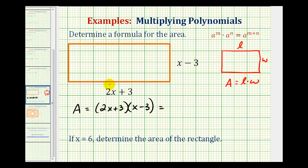So remember we'll have four products. We'll distribute the 2x here and here and then distribute the 3 here and here. So 2x times x, that would be 2x squared.